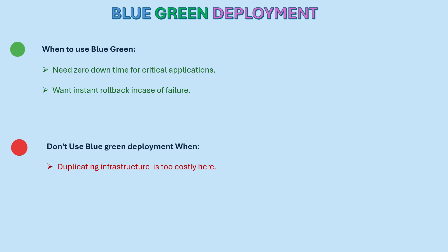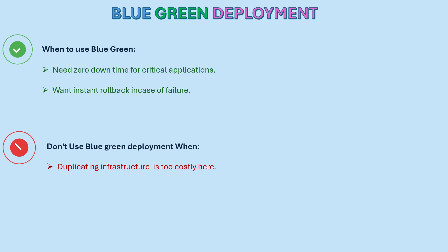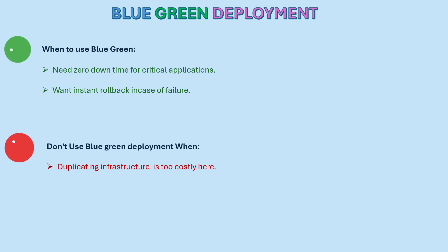Let's discuss when to use blue-green deployment. If there is a need for zero downtime for critical applications, then we can definitely go with blue-green deployment. Also, if you want instant rollbacks in case of any failures, that is another situation where blue-green deployment is a good choice.